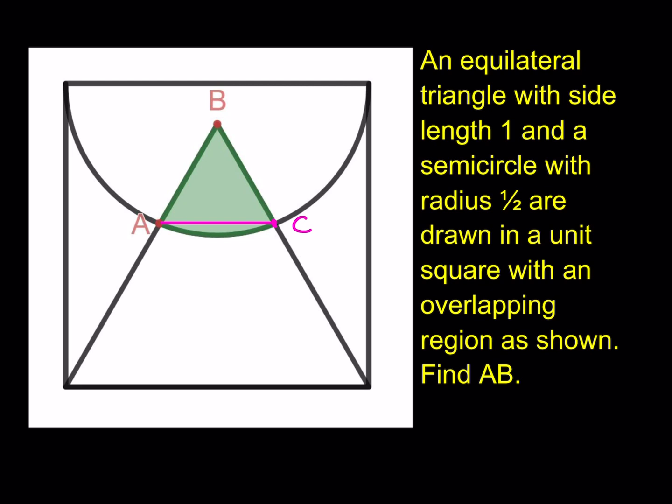Now notice that BAC is a triangle, but it's a special triangle. Why? Because from symmetry, and I think it's kind of obvious that this figure is symmetrical. And from symmetry, we see that this AC is parallel to the base. Therefore, if this is 60 degrees, which is because equilateral, this is also 60 degrees. Since this is 60 degrees, this is also 60 degrees. Therefore, this is also 60 degrees. What are you getting?